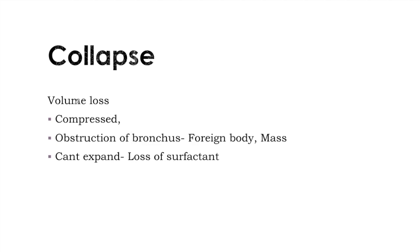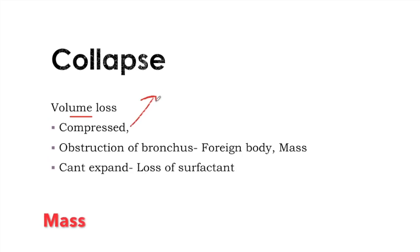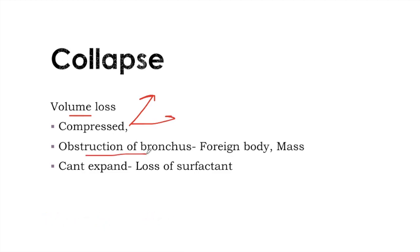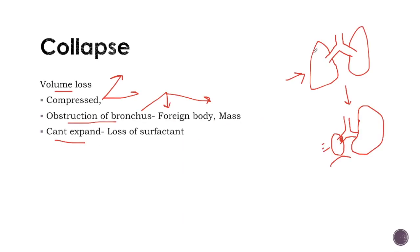Collapse, on the other hand, is characterized by volume loss. Collapse may occur when the lung is compressed, either by a mass or from pleural effusions, when there is obstruction of the bronchus such as an endobronchial foreign body or endobronchial mass, or when the lung can't expand due to loss of surfactant.